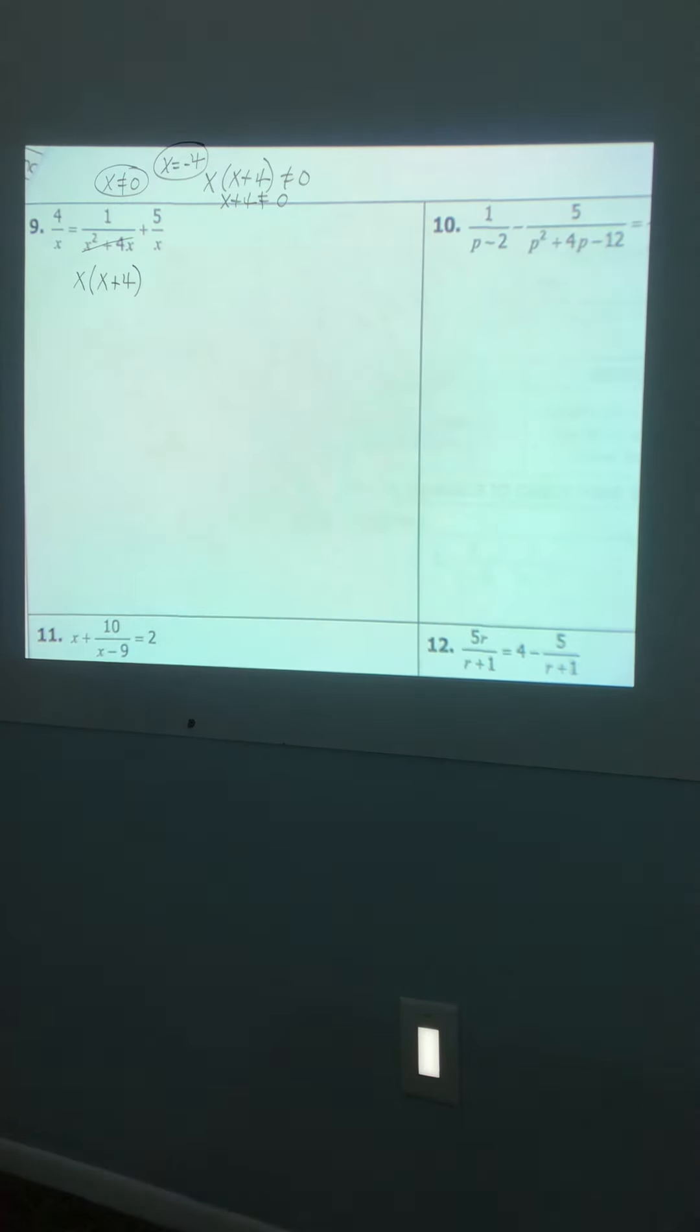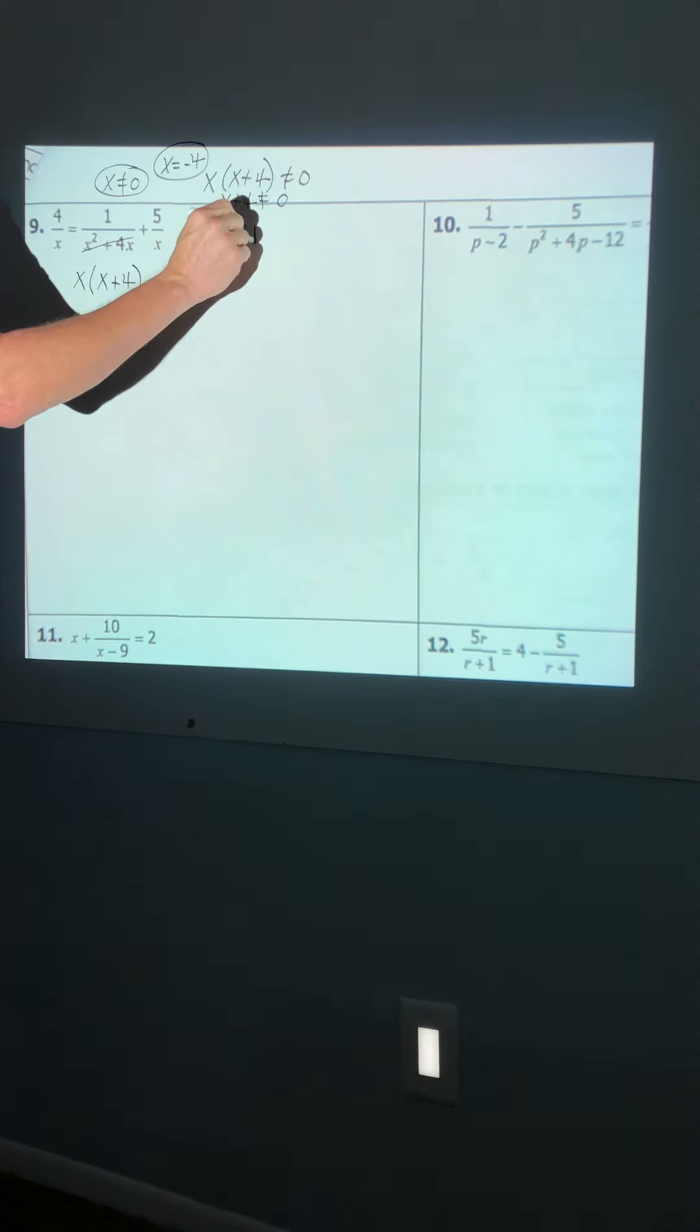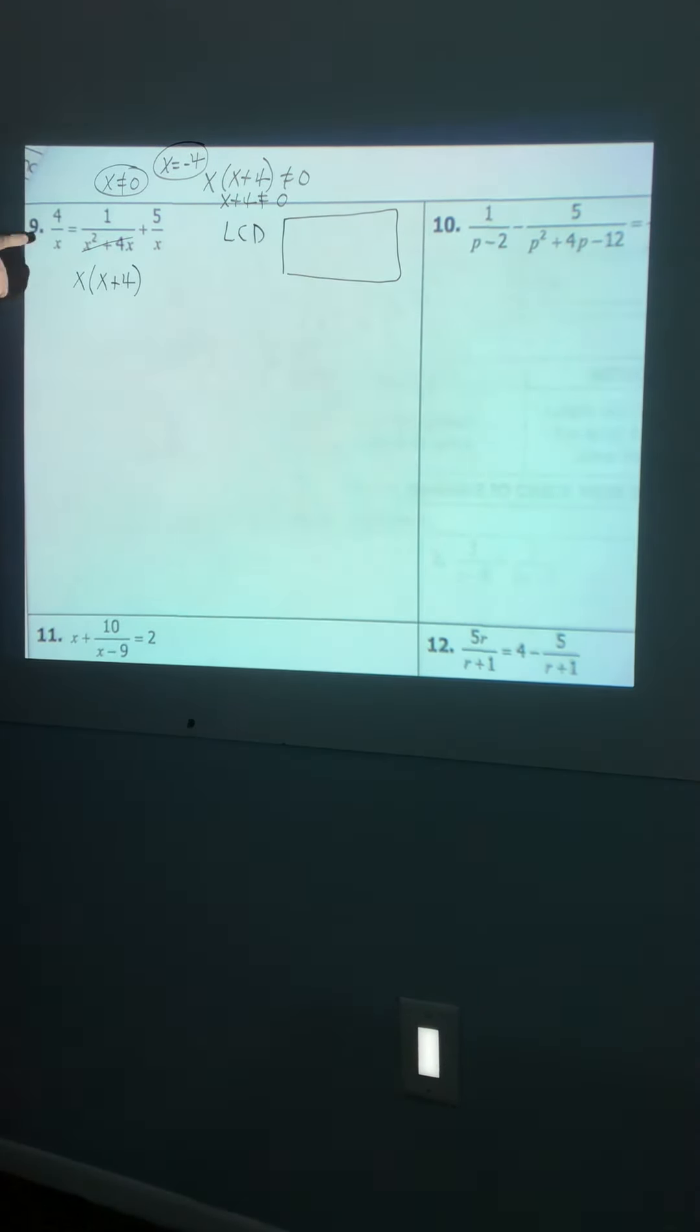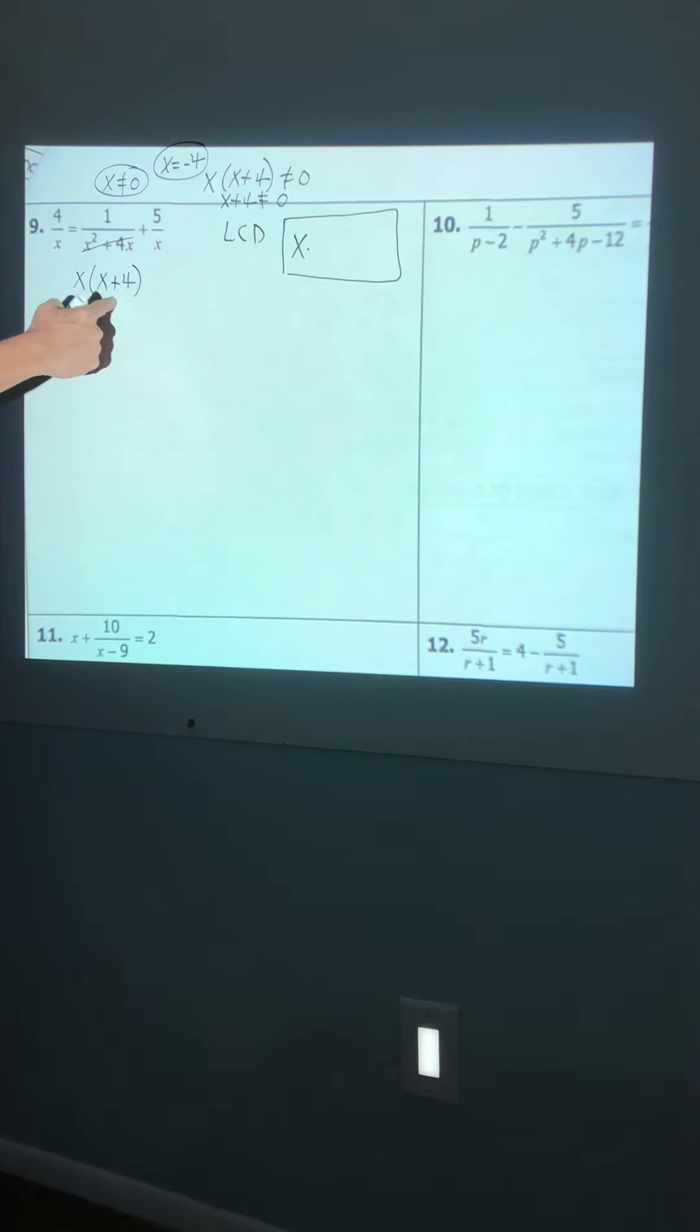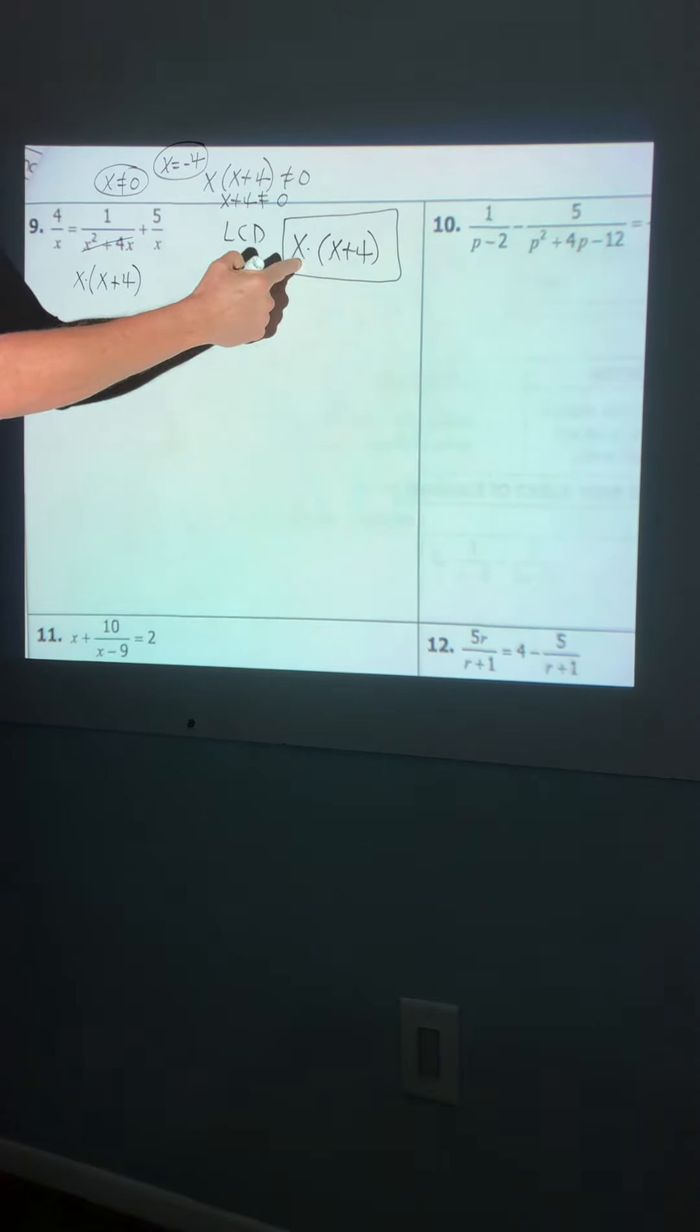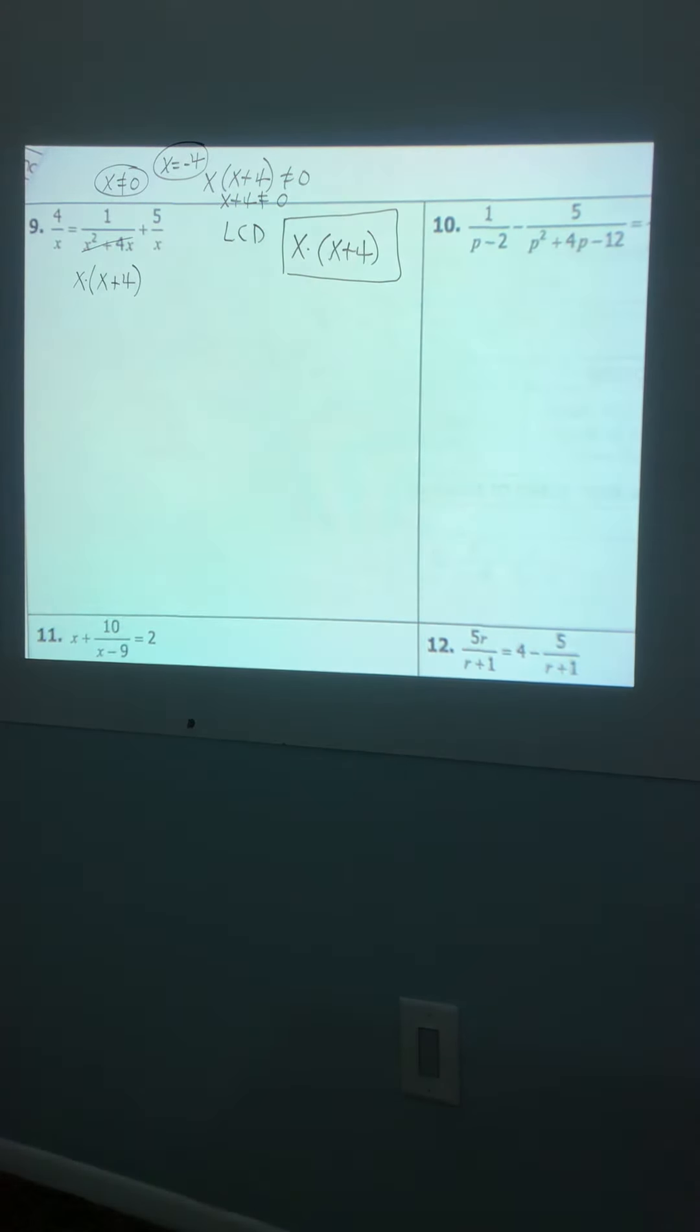We're going to use this same method. I'm telling you, the LCD method is the way to go. What factors do I see in the denominator? I see a factor of x. I got to have it. Look, I see x again, but I already have it accounted for. I see a factor of x plus 4. I want it. And look, x is already accounted for, so I don't need to write another x. This is your LCD. Probably the biggest battle, honestly, is figuring out that LCD. So when in doubt, just include all factors. All factors in the denominator, anyway.